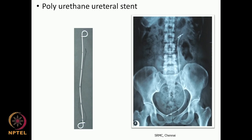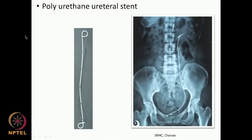This is an x-ray of the polyurethane ureteral stent. The ureteral stent is placed between the ureter and the bladder so it allows urine to flow nicely down to the bladder. Sometimes there could be stones blocking the ureter or infection preventing urine flow, so they place this ureteral stent to ensure urine flows properly into the bladder.